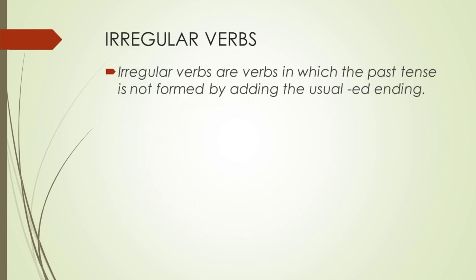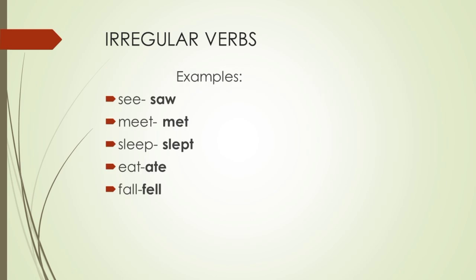Another verb mentioned in the paragraph is the word 'saw.' Saw is the past tense of what verb? It's the past tense of 'see,' and this is an example of an irregular verb. Irregular verbs are verbs in which the past tense is not formed by adding the usual -ed ending. Just like 'see,' its past form is 'saw.' Here are five examples: see/saw, meet/met, sleep/slept, eat/ate, and fall/fell.